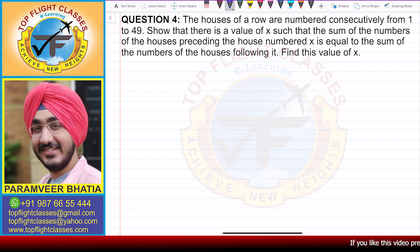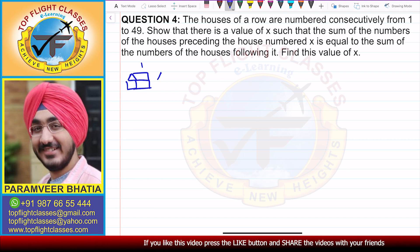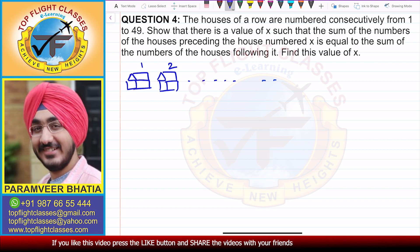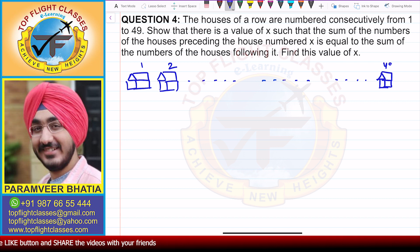What is given in the question? There is a row of houses numbered consecutively from 1 to 49. So the first house is number 1, then house number 2, and so on till 49. The last house in our row is the 49th house. Now we are saying that there is a value of x.